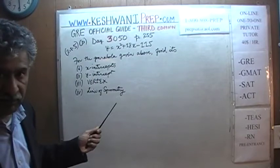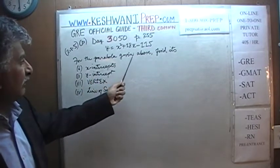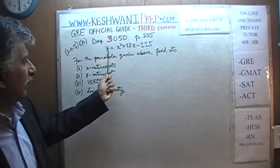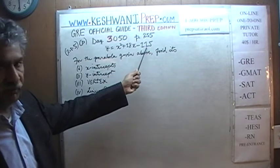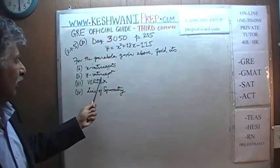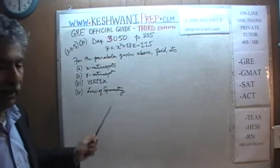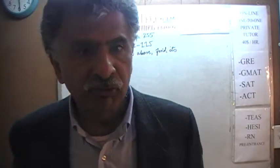Here is what the problem says. It deals with the parabola: for the parabola given above, which is y = x² + 18x − 115, find its x-intercept, y-intercept, coordinates of its vertex, and the line of symmetry. Now if you have watched parts A, B, and C, you know by now what to do.